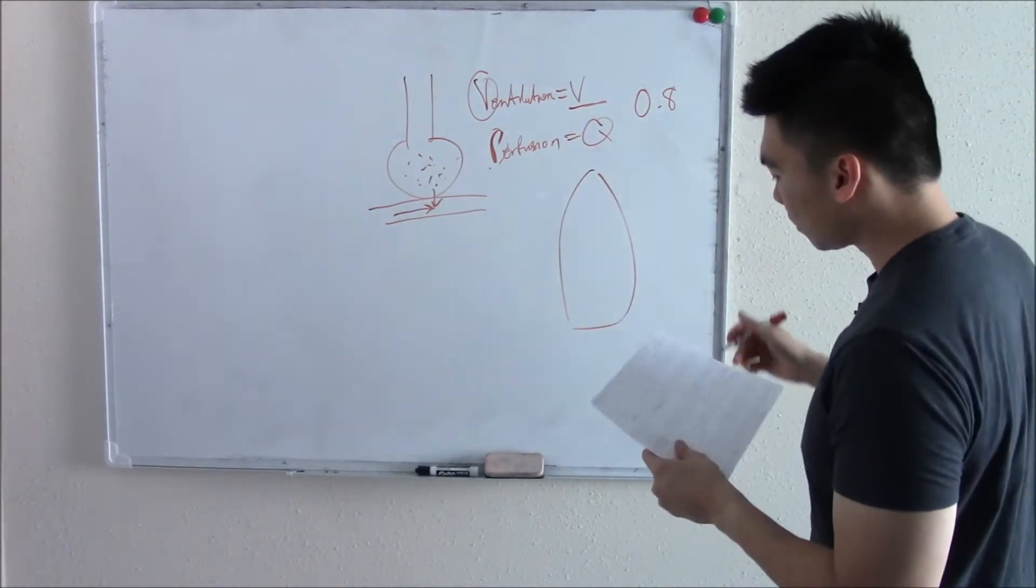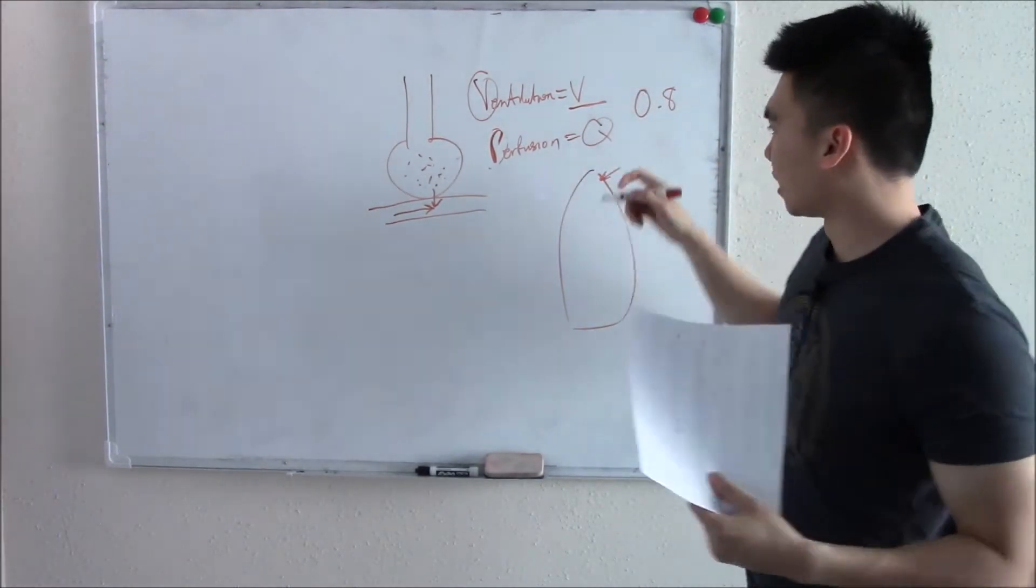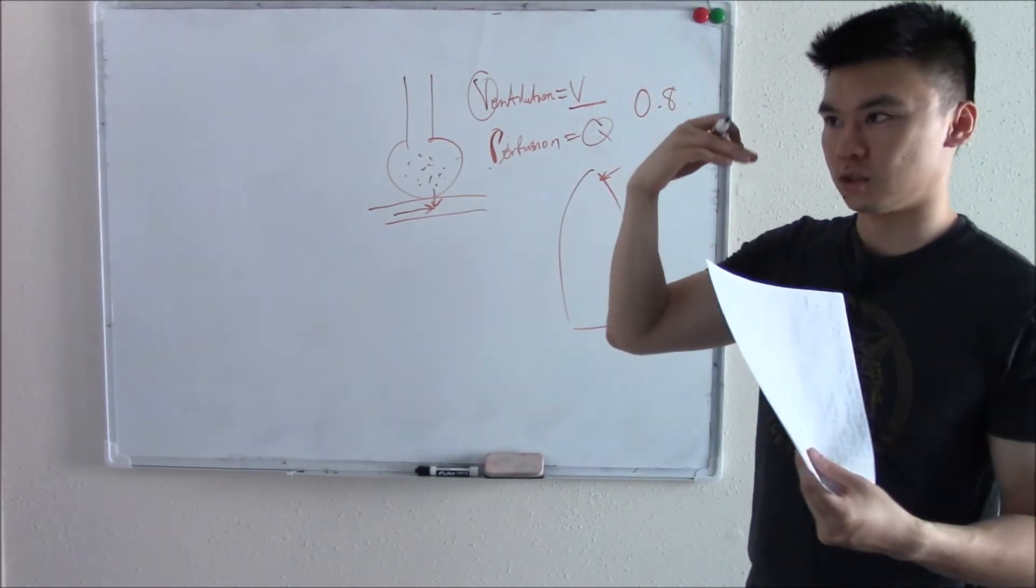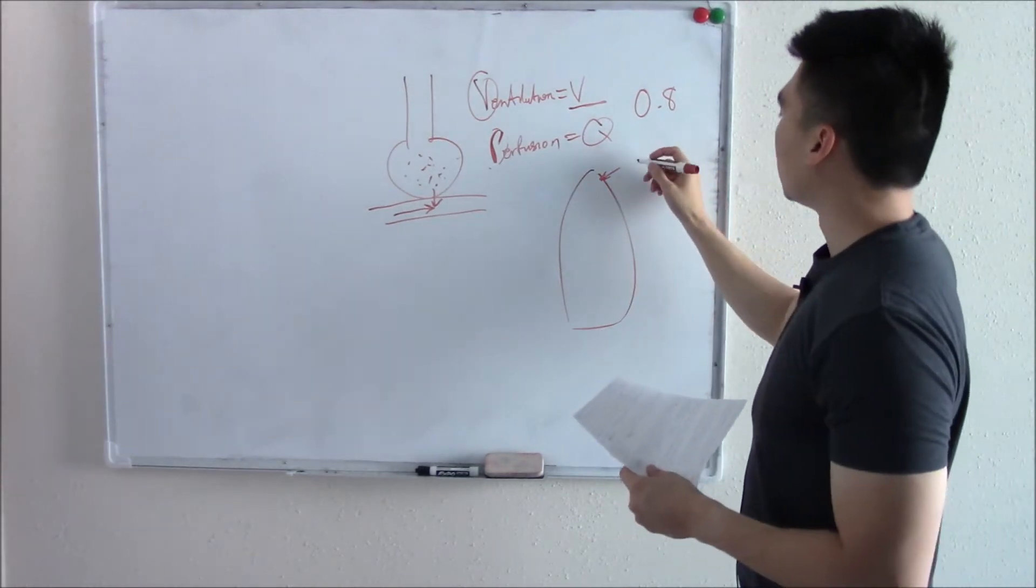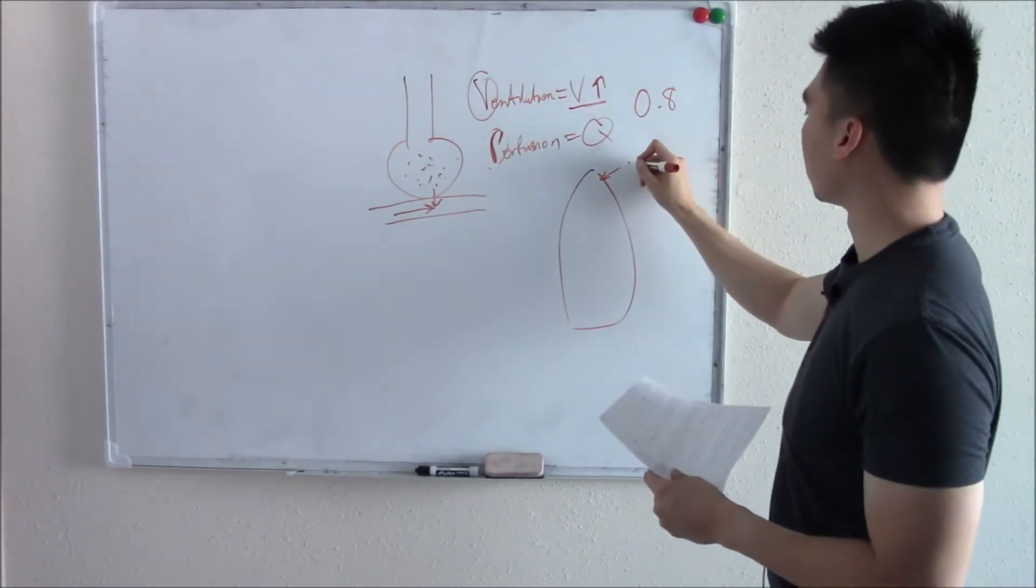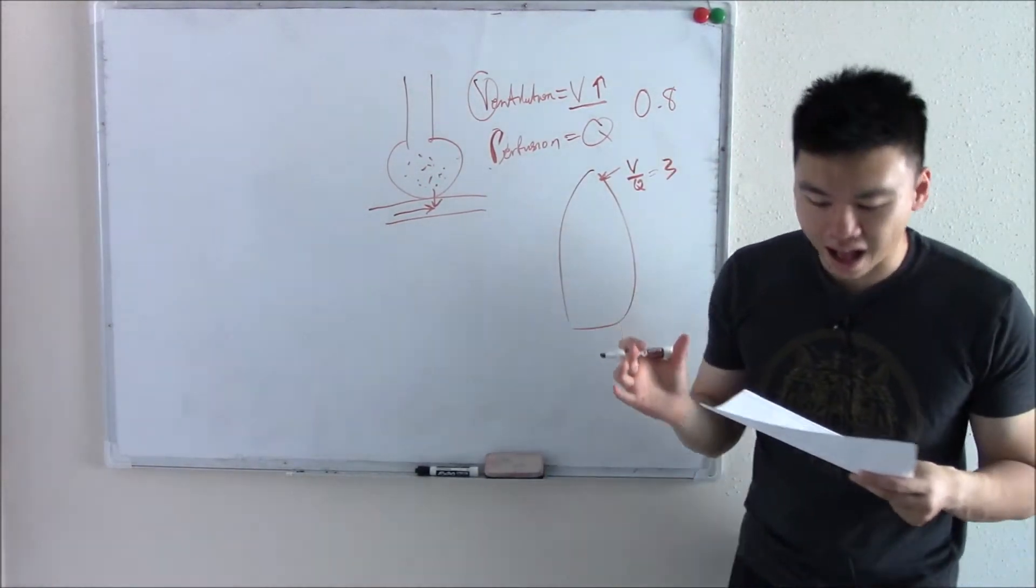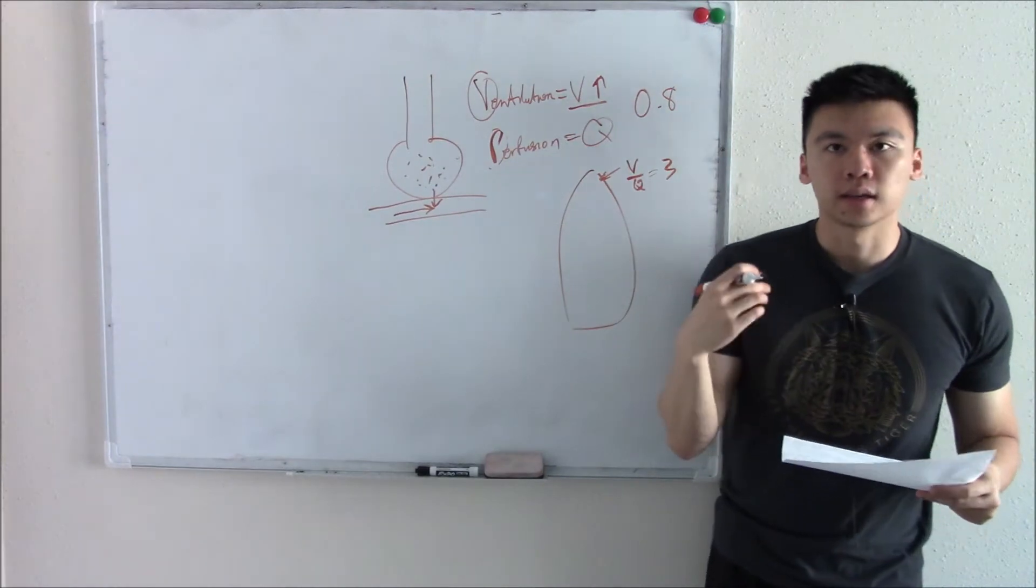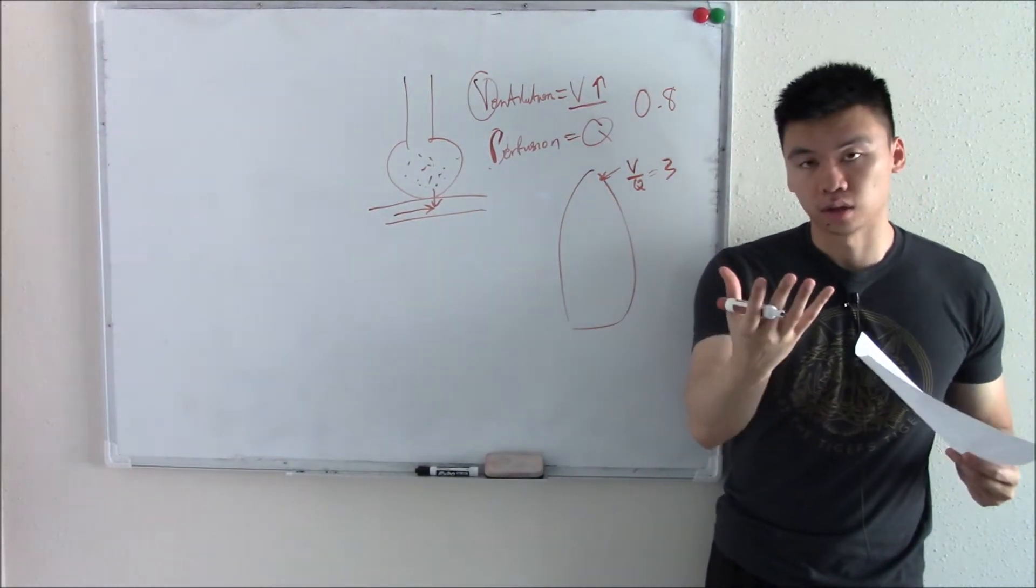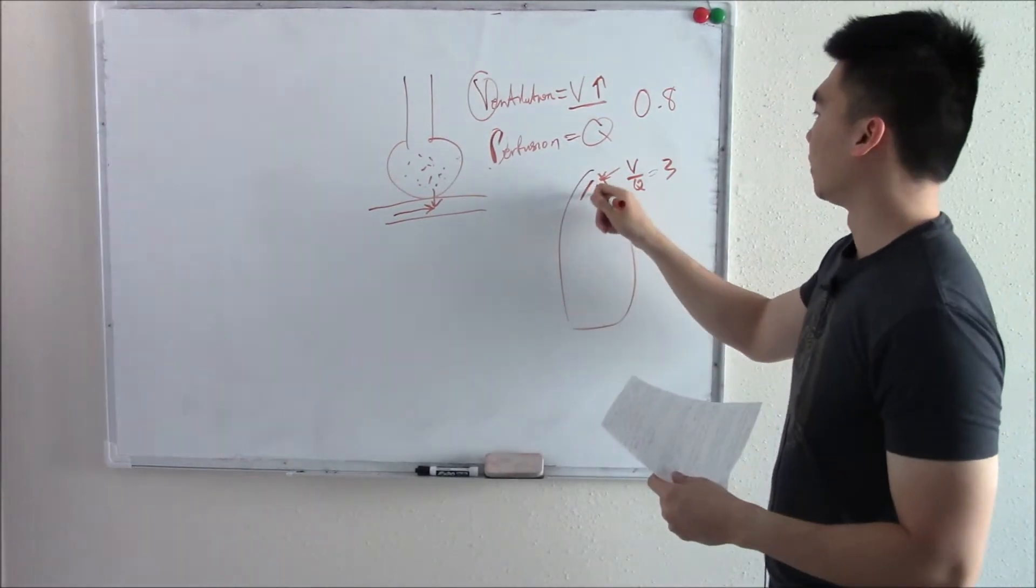Here's your lungs. Up top, in your apex, you have a ton of air. That's the closest it gets to your trachea. So you have a ton of V. What does that do to the ratio? It'll increase the ratio. So VQ over here is around 3. Some important pathology tie-in: Aerobes that like oxygen, like tuberculosis, like to reactivate in the upper lobe because there's a ton of air there.